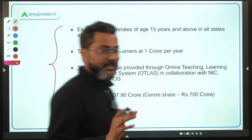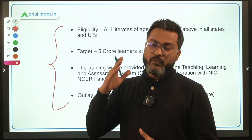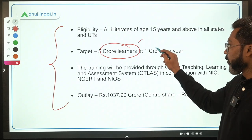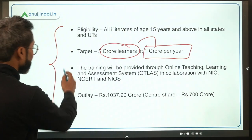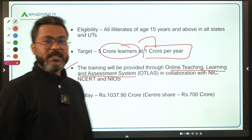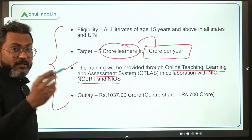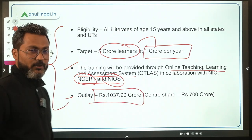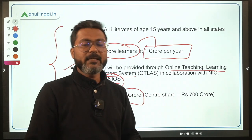Eligibility covers all illiterates of age 15 years and above in all states and UTs. The target is to train 5 crore learners at 1 crore per year. Training will be provided through OTLAS — Online Teaching, Learning and Assessment System — in collaboration with National Informatics Centre, NCERT, and National Institute of Open Schooling. The total outlay is Rs. 1037.90 crores, of which the central government provides Rs. 700 crores and state governments bear the remaining Rs. 337.90 crores.